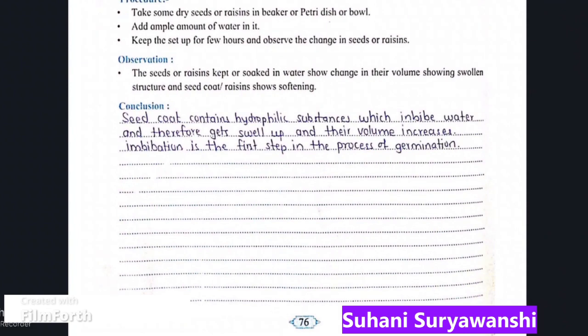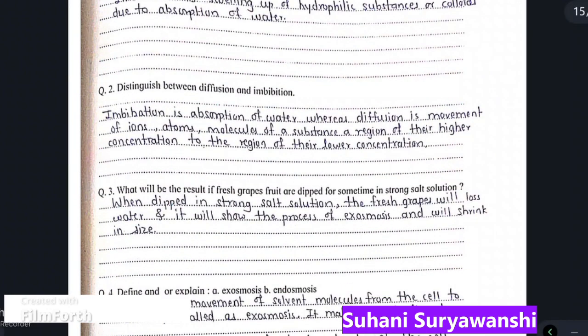The conclusion is that seed coat contains hydrophilic substances which imbibe water and therefore get swollen up and their volume increases. Imbibition is the first step in the process of germination.